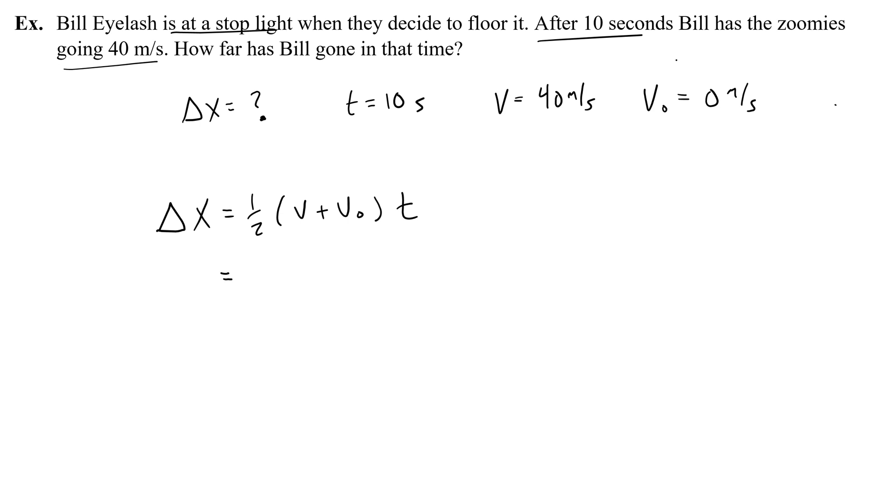So I would plug in my final velocity of 40 meters a second and 0. And then multiply by 10. So 40 plus 0 is 40. Half of 40 is 20. 20 times 10 is 200. All right, and in this case, it would be a positive 200 meters. So our answer, we don't have to ignore the negative. It just is 200 meters.